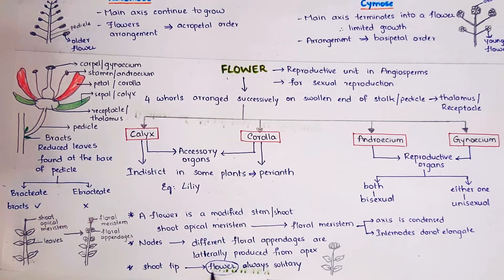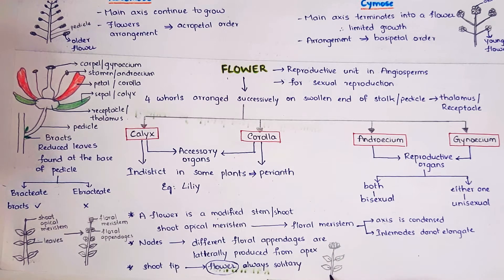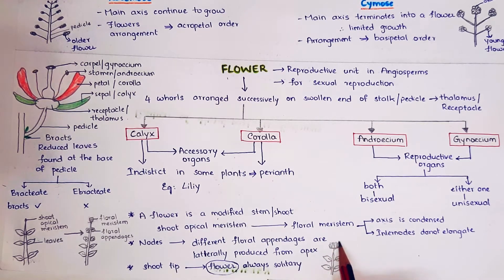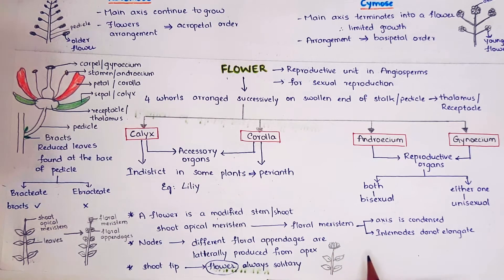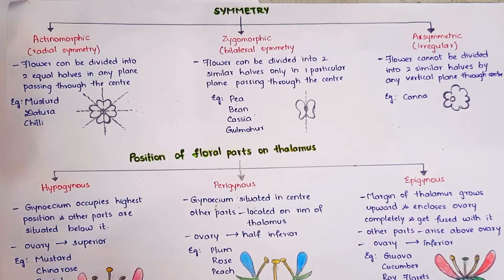When a shoot tip develops into a flower, it is always solitary — that means alone, it is single. Coming to the next topic: symmetry. What is meant by symmetry? If we divide a substance through a particular plane, the resultant halves should be identical and mirror images. Such halves are said to be symmetrical.